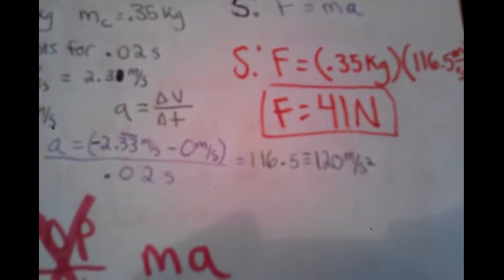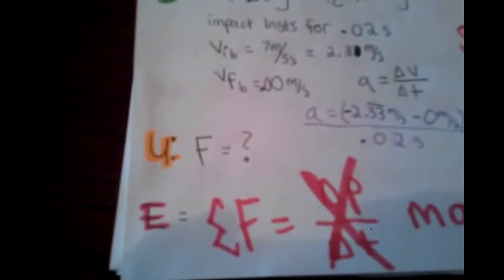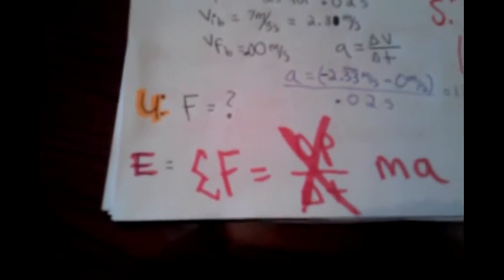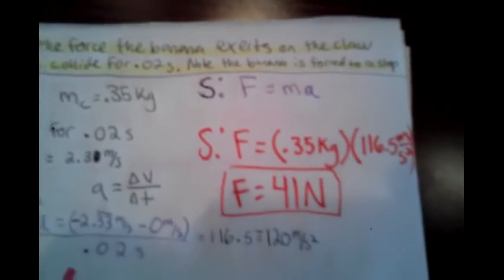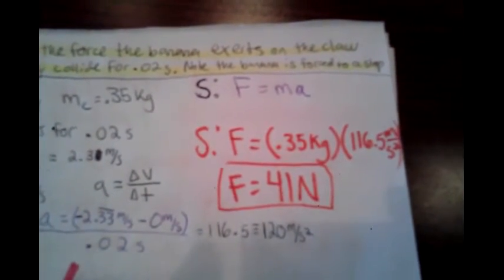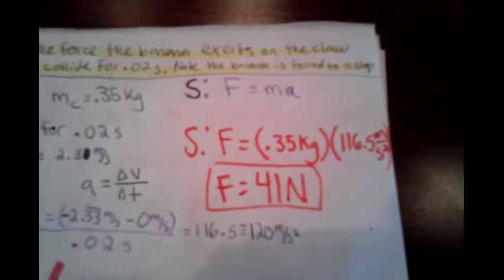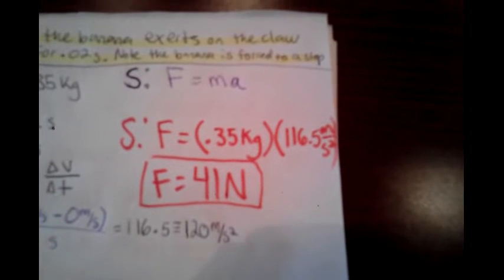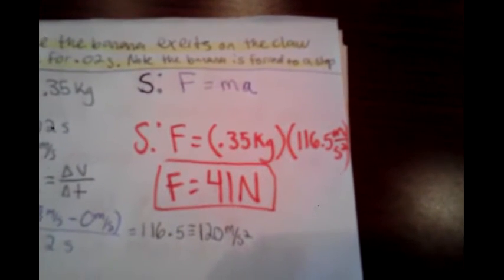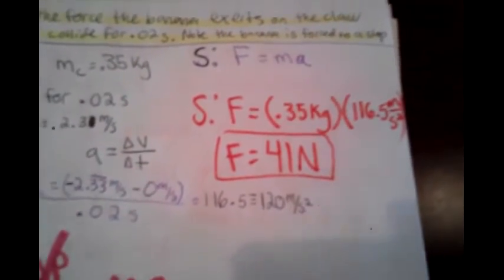For significant figures, we will be using 120 meters per second squared. The equation we will be using is net force equals mass times acceleration. Plugging in the values: force equals 0.35 kilograms times 116.5 meters per second squared for the acceleration. We get 41 newtons.